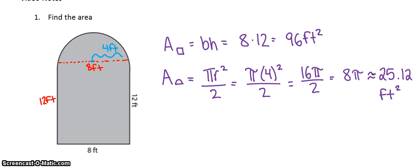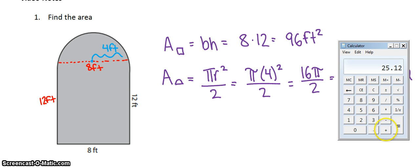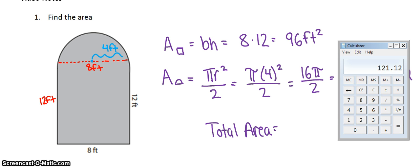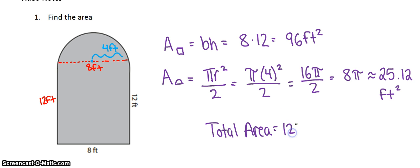This little squiggly equal sign just means approximately, not exactly. So I have the area of each piece. Now I need to add them together for the total area. The total area is just the two pieces added together, which would equal 121.12 feet squared.